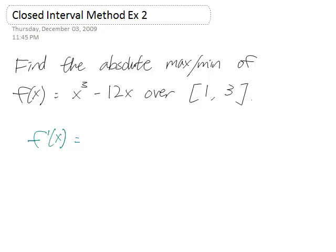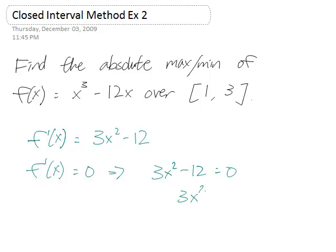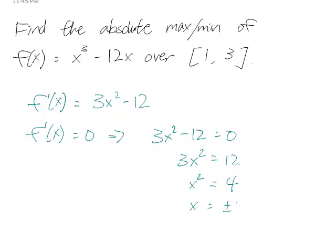The first thing to do is to take the derivative, 3x squared minus 12, then we set it equal to 0 to find the critical points. Add 12 to both sides, divide by 3, and then we have x equals plus or minus 2. Don't forget the negative square root.